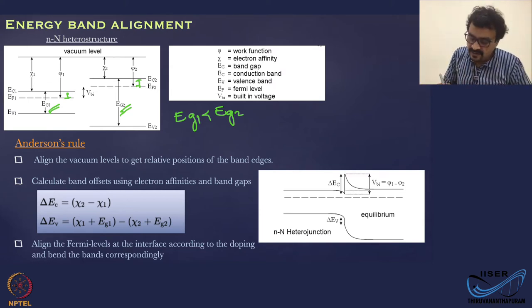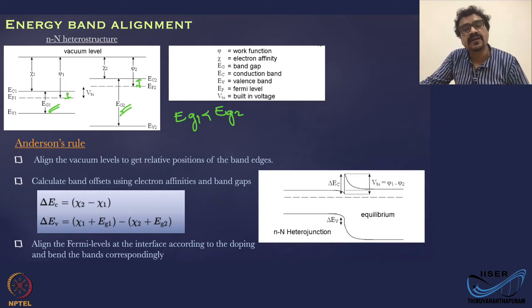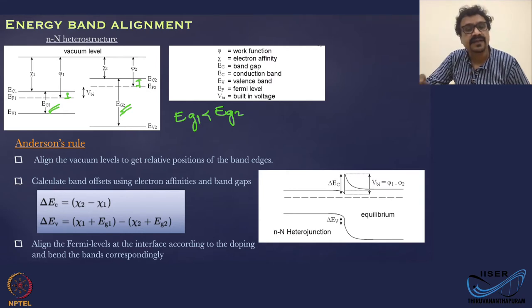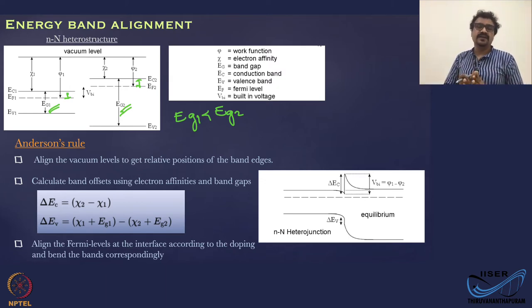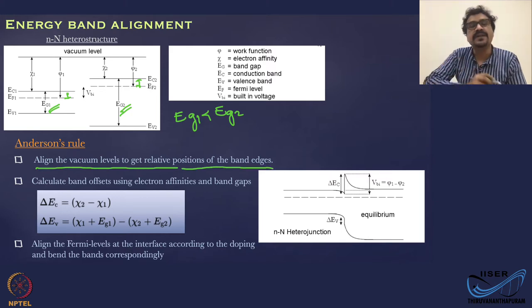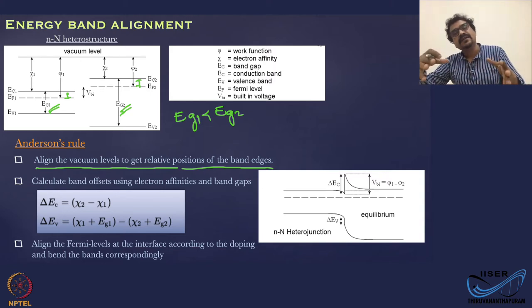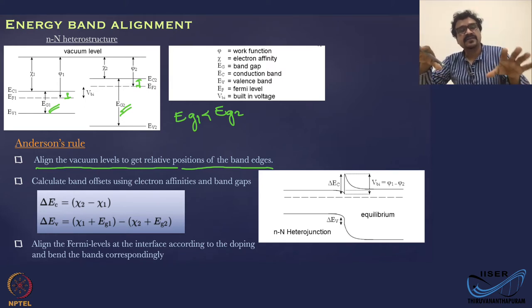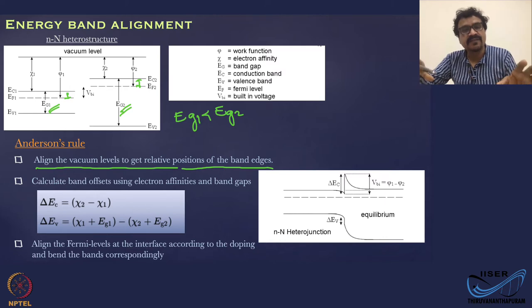The Anderson rule is a simple picture, though realistic materials can be complicated. But to first order, this is how we understand how the two materials are joined. The Anderson rule says the first thing you do is align the vacuum levels to get the relative position of the band edges. So you have a vacuum level, and you align the conduction band, valence band, Fermi level — everything — with respect to that. The vacuum level is your reference, and you can think of the rest as hanging from that point.